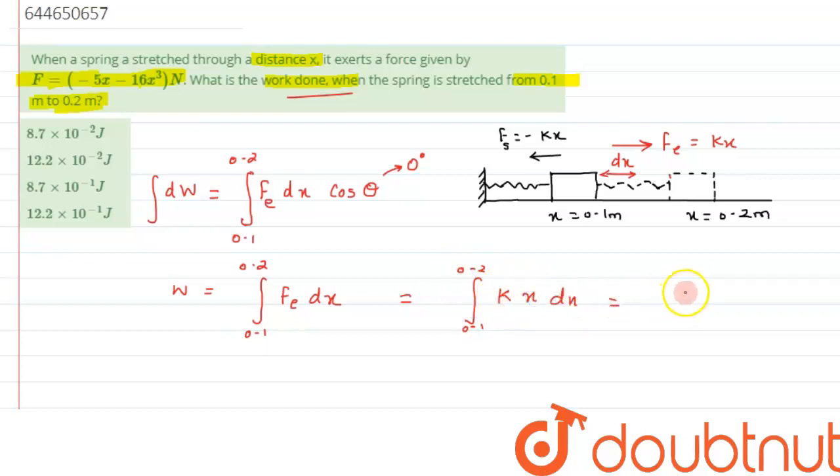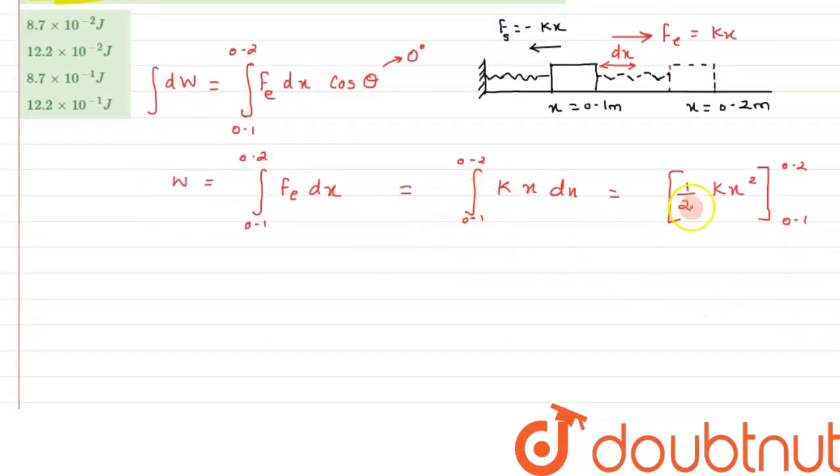That is 0.1 to 0.2 and kx dx. So from here we will get the answer as half of kx squared. This has to be with the limit 0.1 to 0.2 meters.